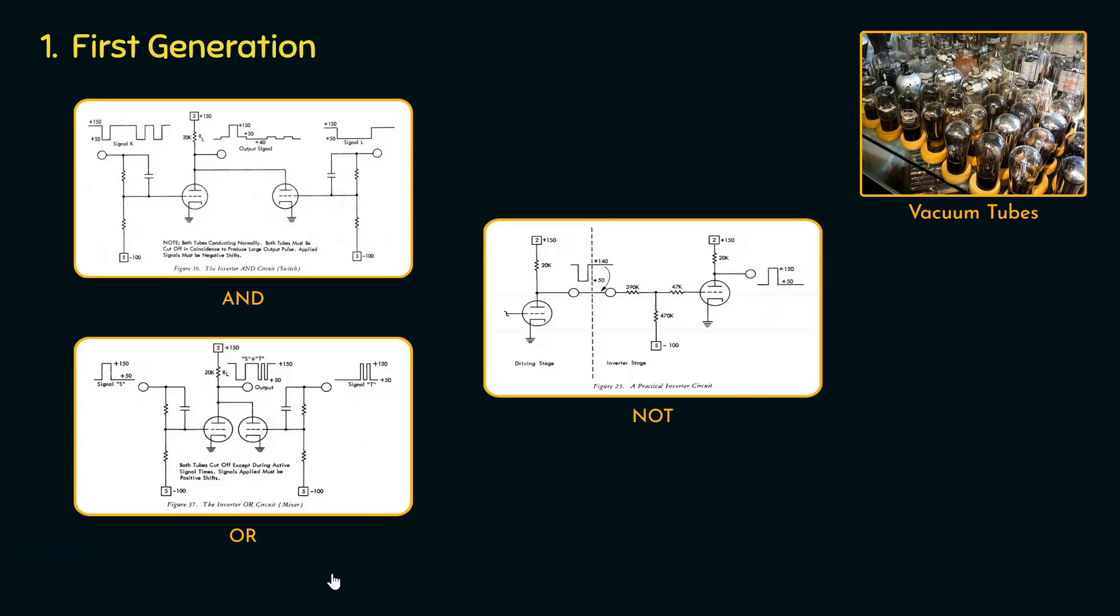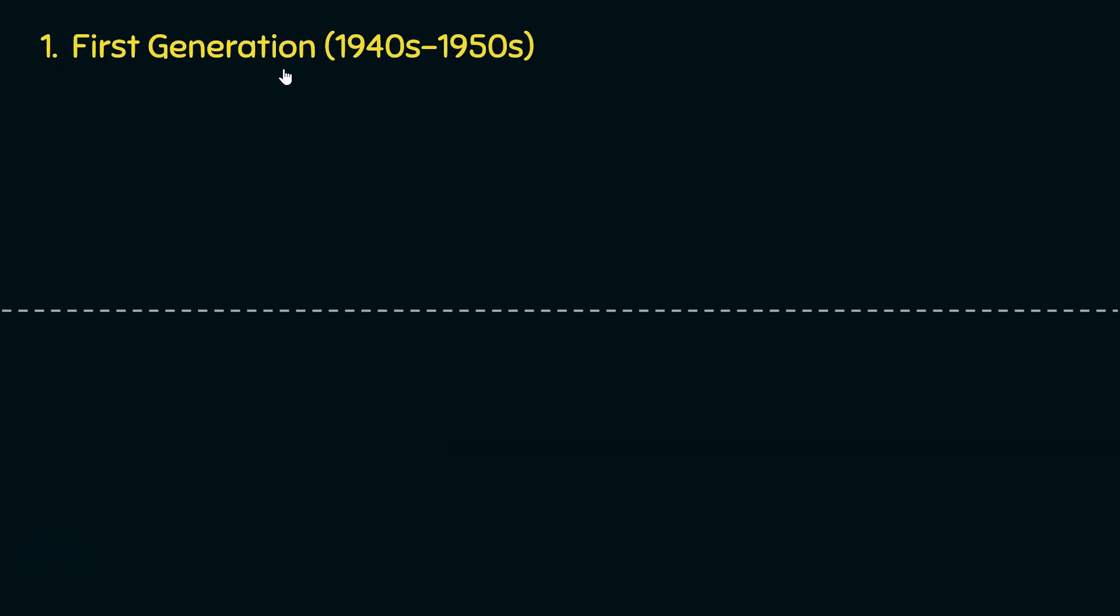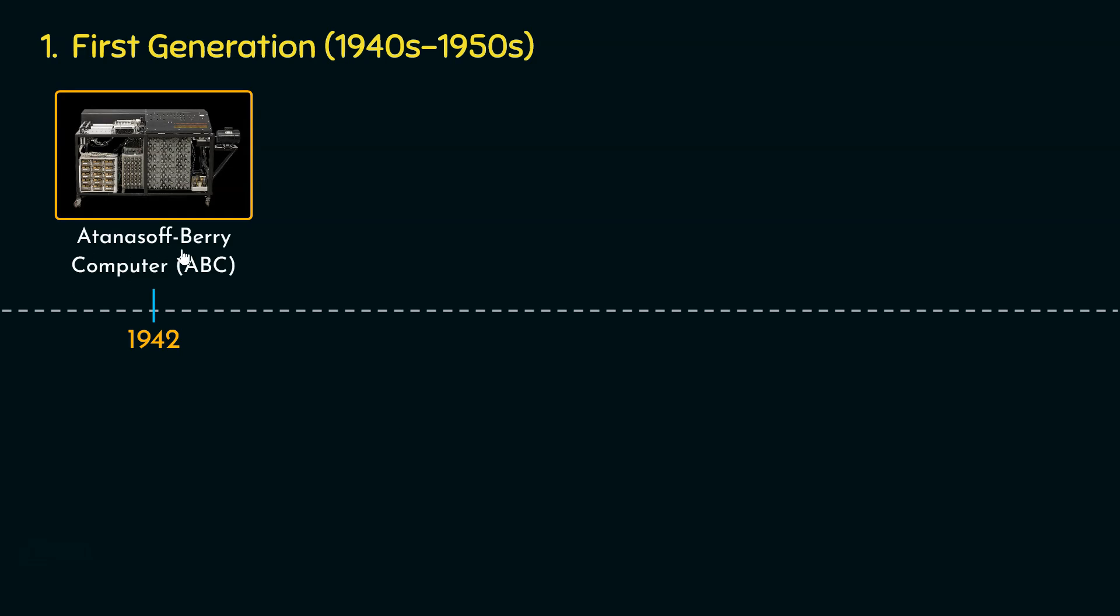Let's now talk about the milestones of the first generation. In 1942, the Atanasoff-Berry computer or ABC was invented. The mathematics and physics professor John Vincent Atanasoff, with the assistance from one of his grad students Clifford Berry, designed and successfully tested ABC, the Atanasoff-Berry computer, which was designed to solve systems of linear equations at Iowa State University in 1942. Later, due to World War 2 assignments, Professor Atanasoff had to leave Iowa State University, and therefore the work on the machine was discontinued.